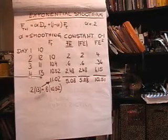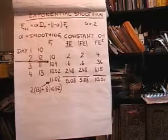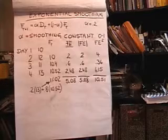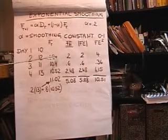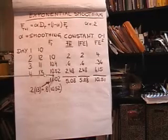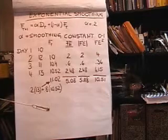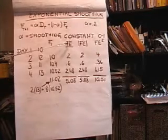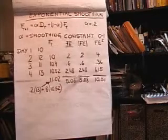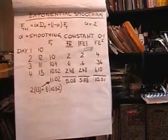The data requirements for exponential smoothing are pretty simple because all you need is the most recent forecast and the most recent data — everything else can be thrown away. The forecast errors are: 12 minus 10 equals 2, 11 minus 10.4 equals 0.6, and 13 minus 10.52 equals 2.48. The summation of forecast errors is 5.08, and the forecast error squared sums to 10.51.